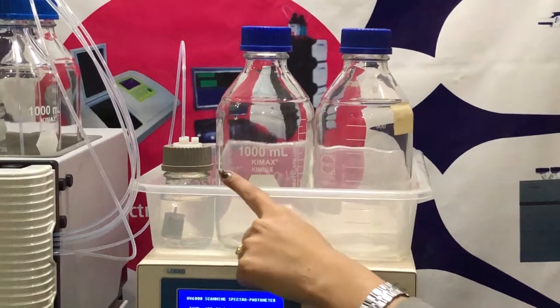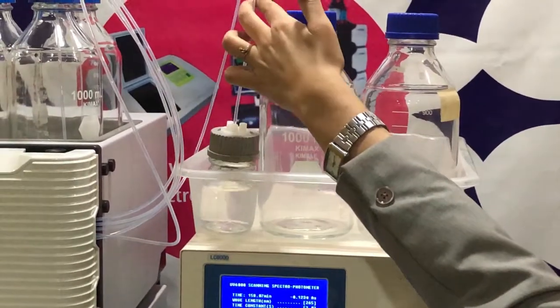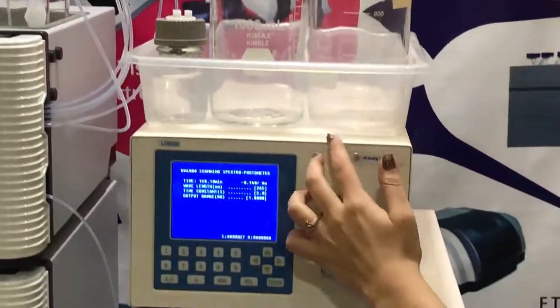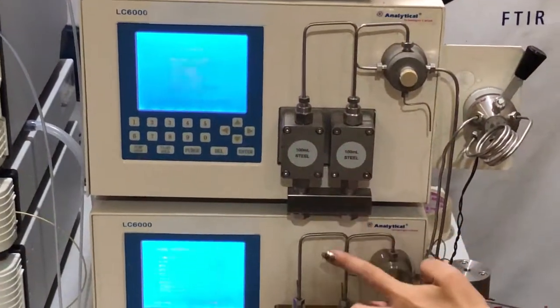Now let's see preparative HPLC. First of all you have the two solvent bottles. These two are pump heads which have 100 milliliter capacity.